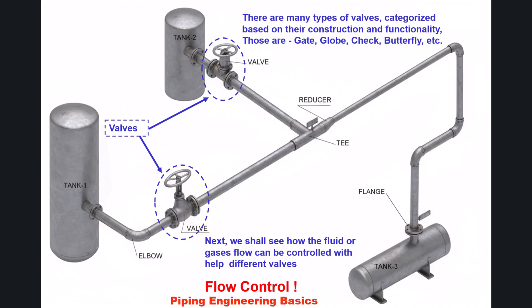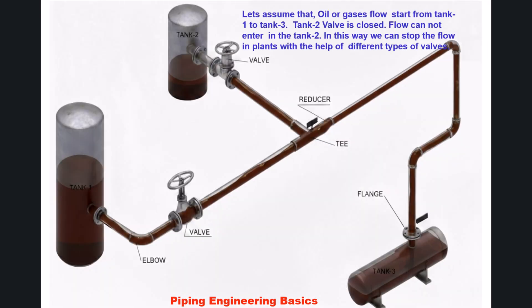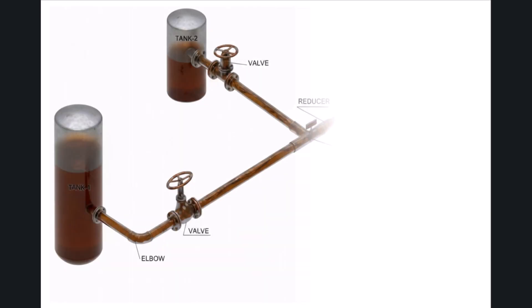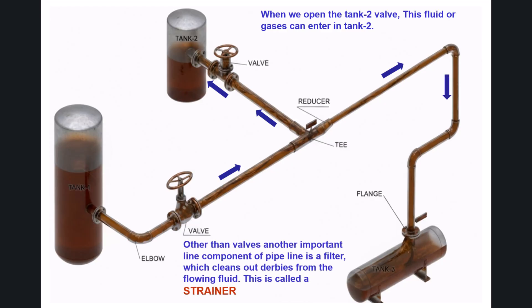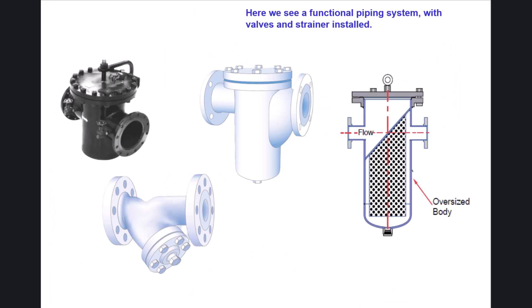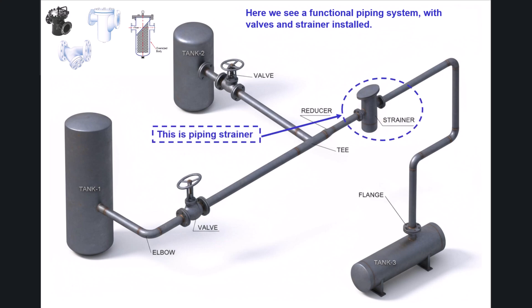For flow control, assume that oil or gas flow starts from tank 1 to tank 3 while the tank 2 valve is closed — flow cannot enter tank 2. When we open the tank 2 valve, the fluid or gas can enter tank 2. In this way, we can stop or direct flow in plants using different types of valves. Another important pipeline component is a filter called a strainer, which cleans out debris from the flowing fluid. Here we see a functional piping system with valves and strainer installed.